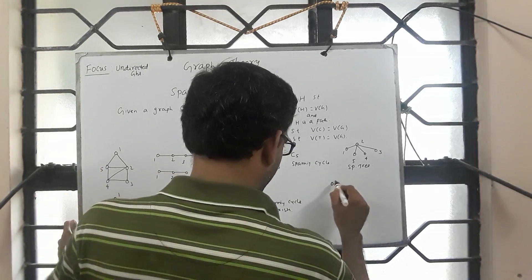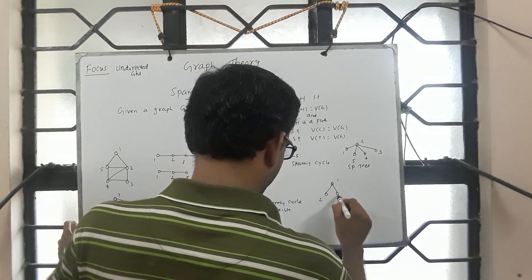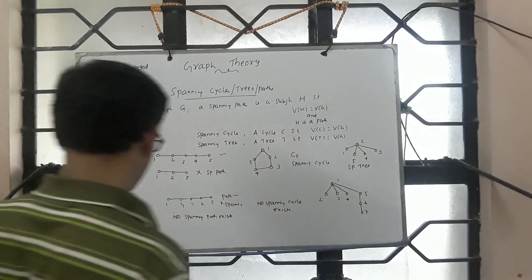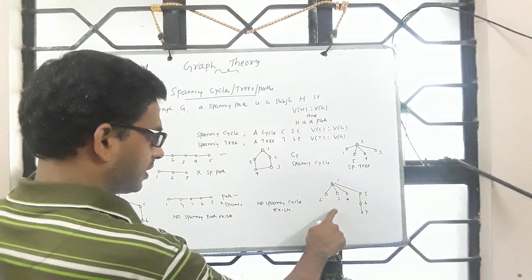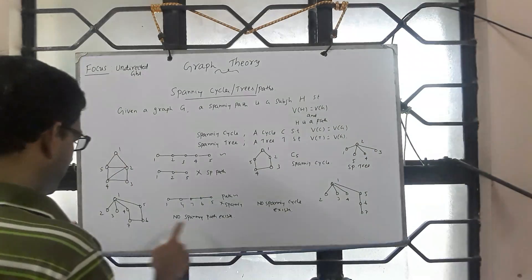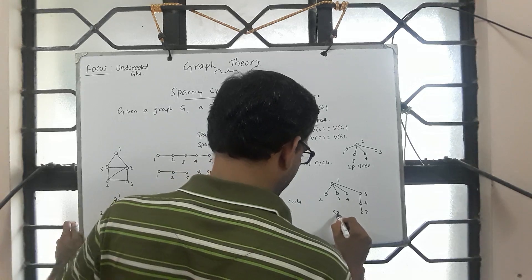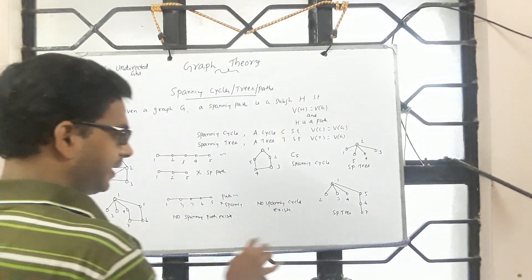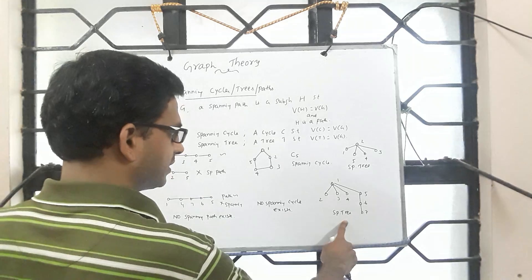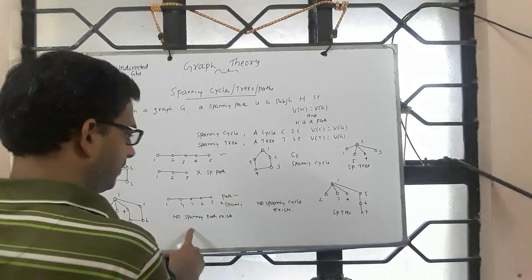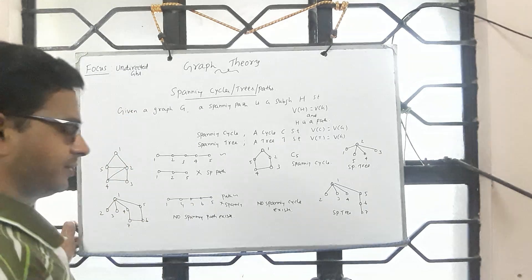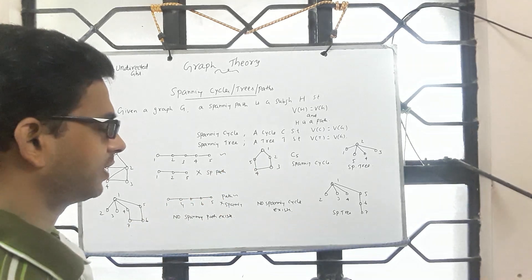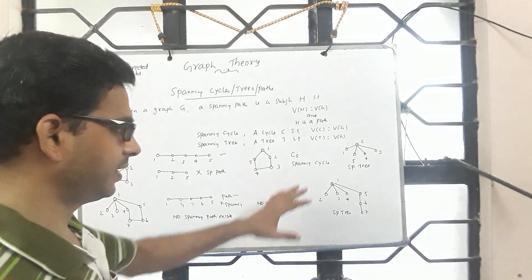How about spanning trees? You can have vertices 1, 2, 3, 4, 5, 6, and 7 forming a tree that is connected, acyclic, and contains all of V of G. So this is an example spanning tree. This shows that spanning trees exist always for connected graphs, while spanning path and spanning cycle need not exist.